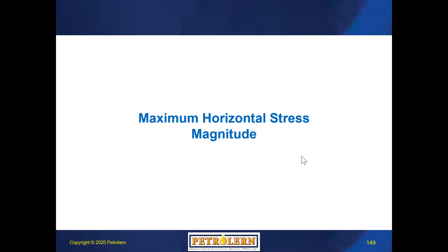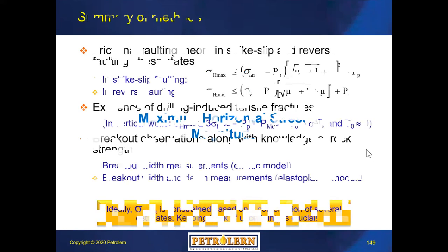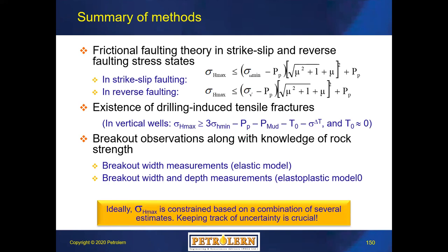With respect to maximum horizontal stress, it is actually one of the most complex parts of geomechanical modeling, because currently there is no methodology available that can directly measure maximum horizontal stress. We have to estimate or evaluate these parameters, and typically there is not much information available to calibrate these horizontal stress profiles. There are three methodologies I would like to discuss today, and all three together try to constrain the range of possible maximum horizontal stress, if we know all other stresses and pore pressure.